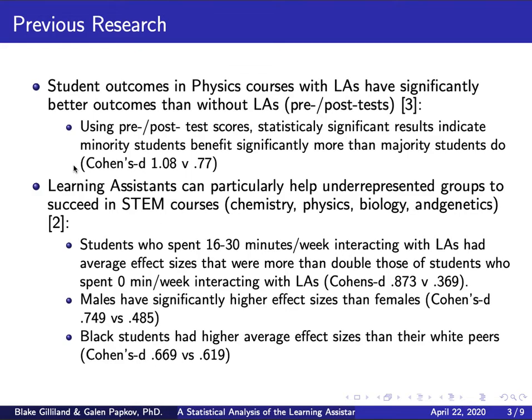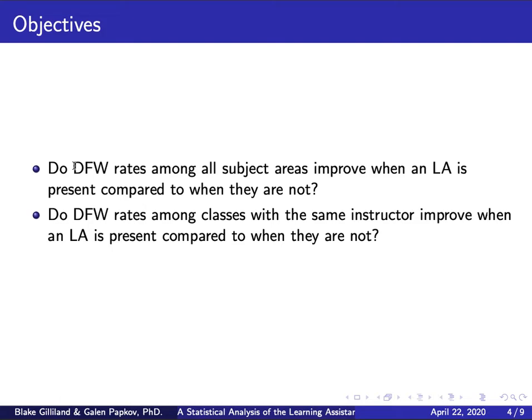The bottom line from the research is that having a learning assistant leads to better results, and we're hoping to see that at FGCU. We don't have the same data collection tools that other universities with well-established programs have. One tool we plan to implement is LASSO — Learning Assistant Supported Student Outcomes, a web-based testing application. For now, we worked with DFW rates as our primary metric.